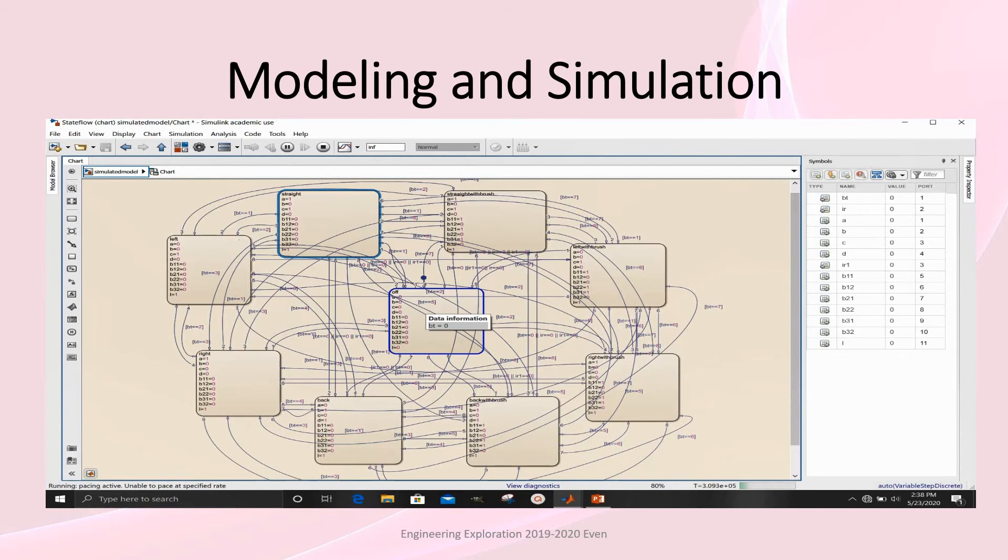There are 9 states: initial off state, straight, left, right, back, back with the brush, right with the brush, left with the brush, straight with the brush.